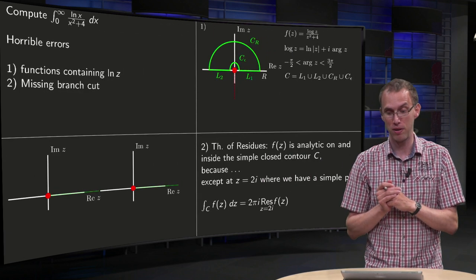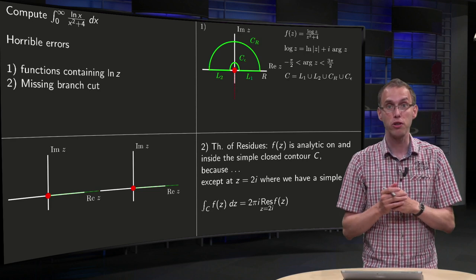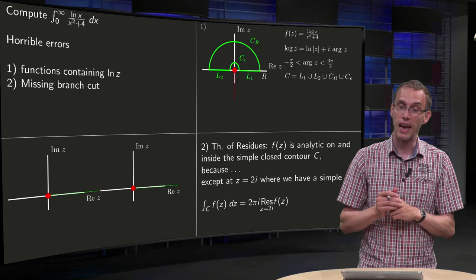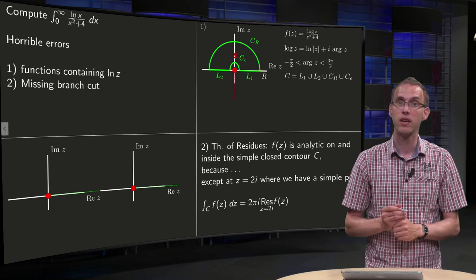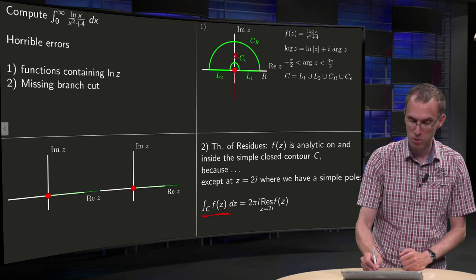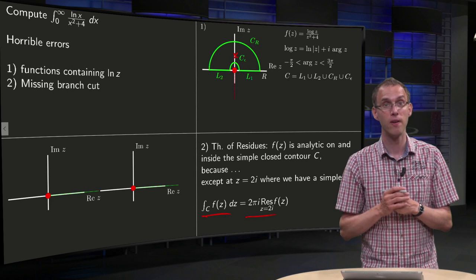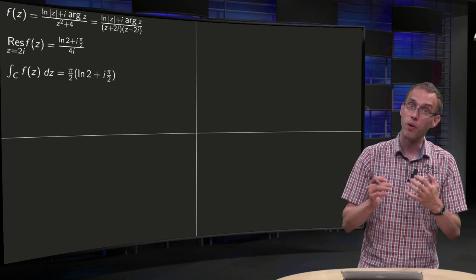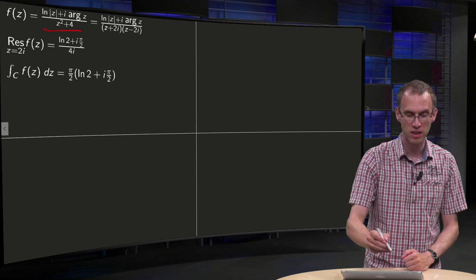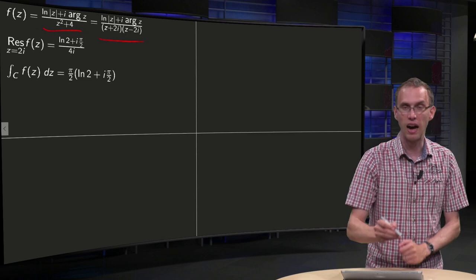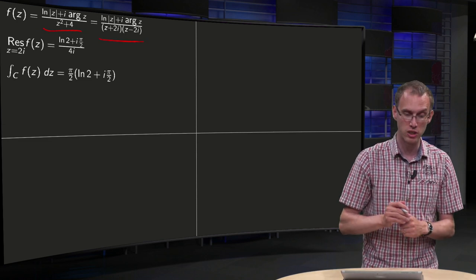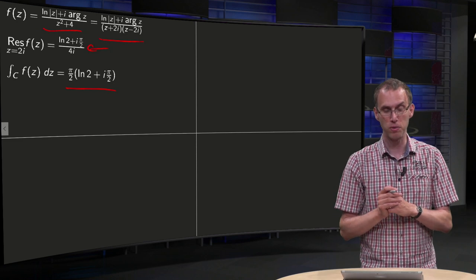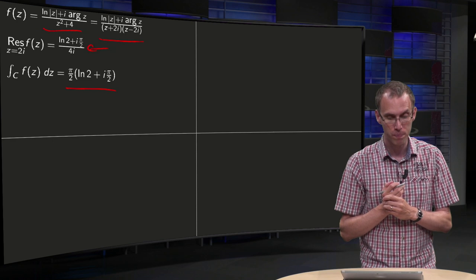On to the second step, we are going to apply the theorem of residues. Well, with all those choices, f of z is analytical inside the simple closed contour c, except at z equals 2i, where we have a simple pole. So that means that our contour integral along the total contour equals 2 pi i times the residue at z equals 2i. Then we still have to compute this residue. We can rewrite f of z, you can rewrite the denominator, factorize it, and then it is very easy to compute the residue. So the total integral equals pi over 2 times ln of 2 plus i times pi over 2. End of step 2.